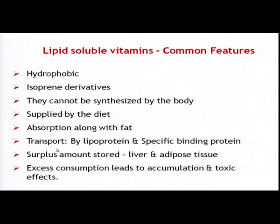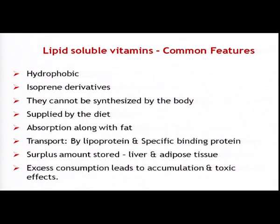Then you have the means by which these vitamins are transported across. You do have lipoproteins and specific binding proteins. This is very important to understand because, being lipid-soluble, their access to cells could be a problem. These carrier proteins — lipoproteins or specific binding proteins — are unique for individual categories of vitamins and play an essential role in making these fat-soluble vitamins available to individual cells at the site of action.